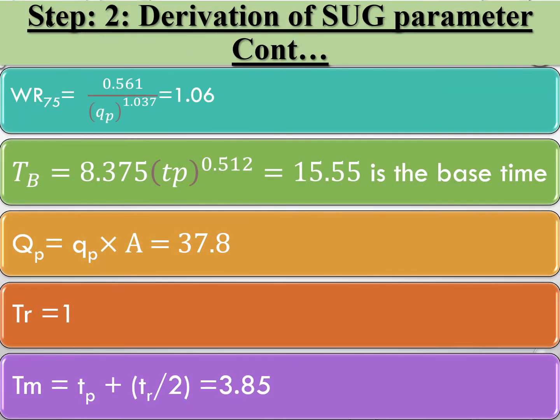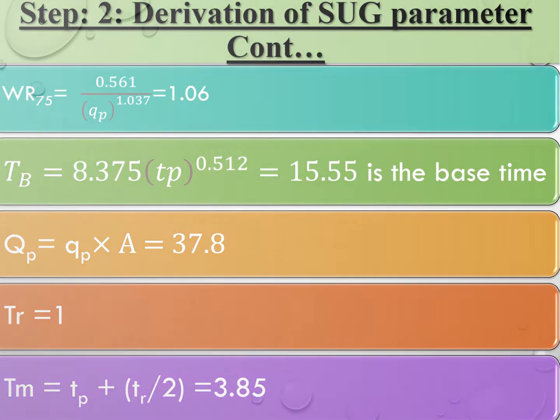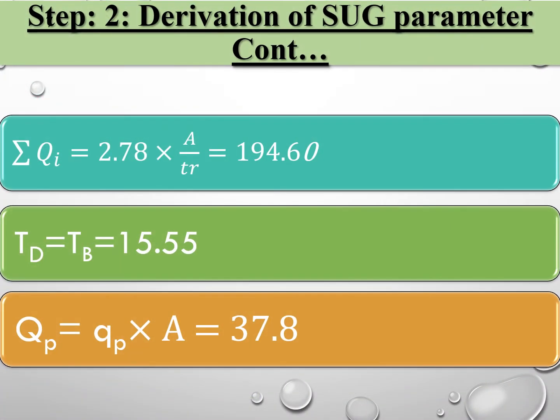qp is the discharge, and the equation is also given where tb is the base time and qp is the discharge. The summation of discharge is calculated as 2.78 multiplied by A divided by tr, giving 194.60 cubic meters per second as the unit discharge. The time base is equal to 15.55 hours, which is the total base time.